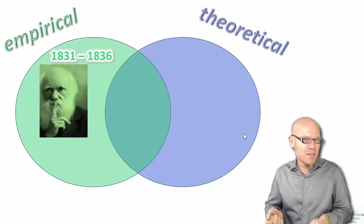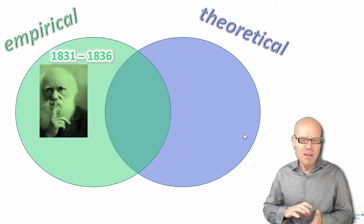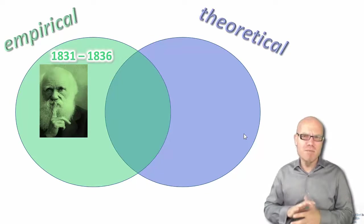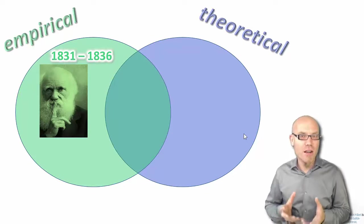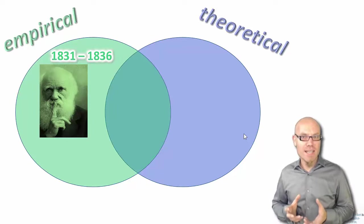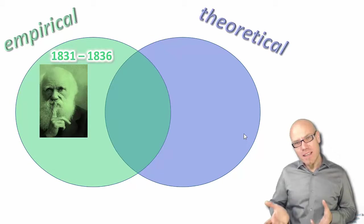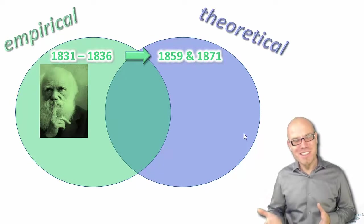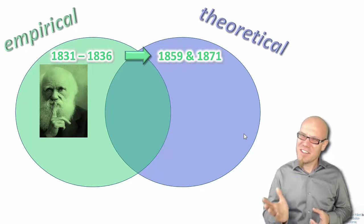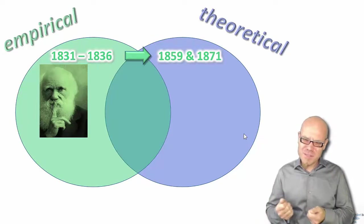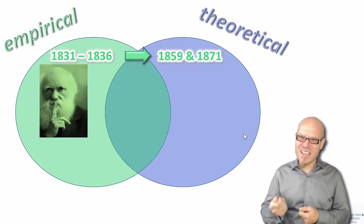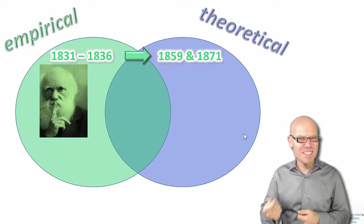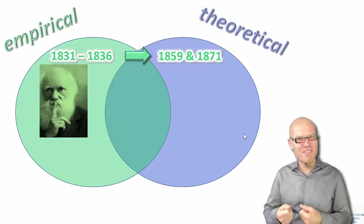He asked why could that be, why do finches on one island have longer beaks than the other. He collected a vast, impressive amount of empirical observation, of data. Then nothing really happened a lot for the general public for 30 years. He was thinking about these conclusions. He thought maybe I'm wrong, are these beaks really longer because the finches adapted to the environment, how could that work, how does evolution work?